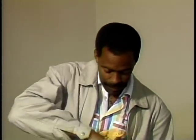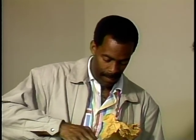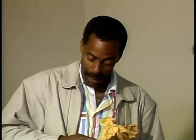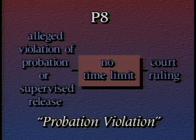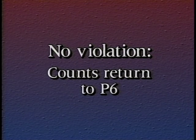A count can move into P-8 only when a defendant on probation or supervised release is accused of violating a condition of release related to that count. Let's say that after serving his prison term, Jones is placed on supervised release but tests positive for cocaine and is charged with violating a condition of release. His counts move into P-8 and remain there until the court holds a hearing. If the court rules Jones violated his supervised release, his counts return to P-5 for resentencing. If no violation is established, his counts return to P-6.